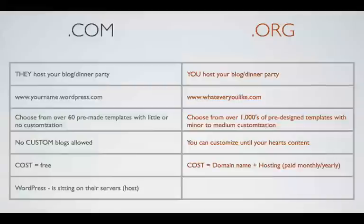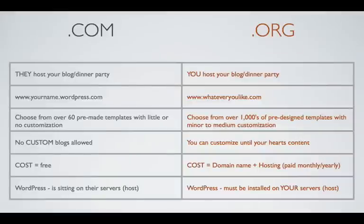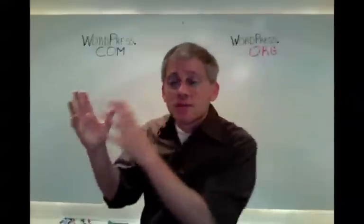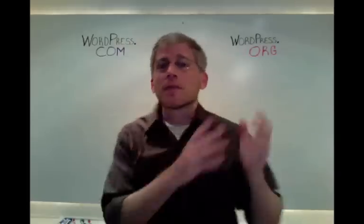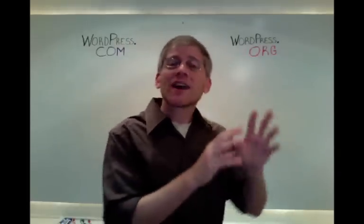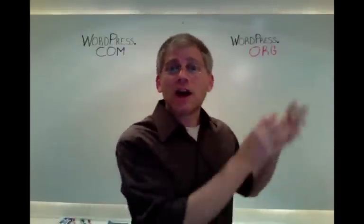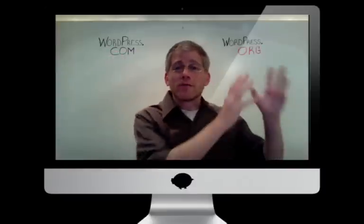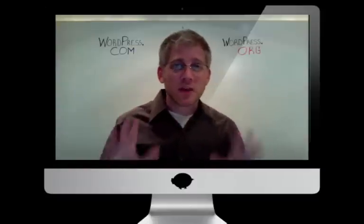WordPress is a blog publishing application. With .com, the publishing application resides on their servers — they host it. Whereas with .org, the blog publishing application has to be installed on your server. If you'd like to start with WordPress.com, you just sign up and start blogging. If you'd like to start with WordPress.org, you go there, download WordPress, and host it on your server. Either way, once you're set up, you're ready to start populating your blog.